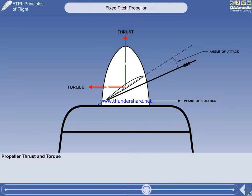Torque is the equal and opposite reaction to the propeller being rotated by the engine. We will see later that torque will generate a yawing moment about the aircraft CG.